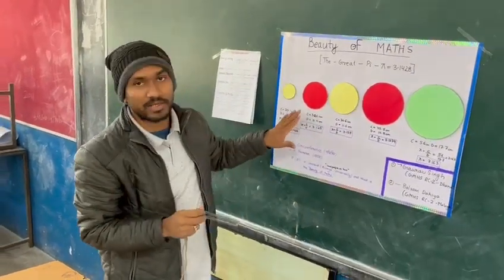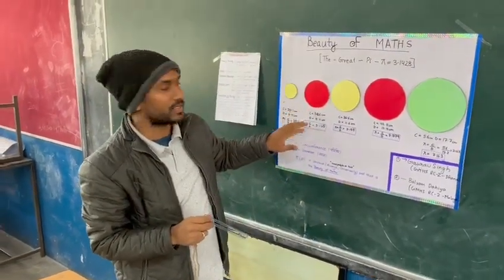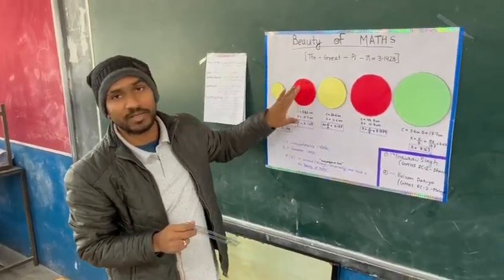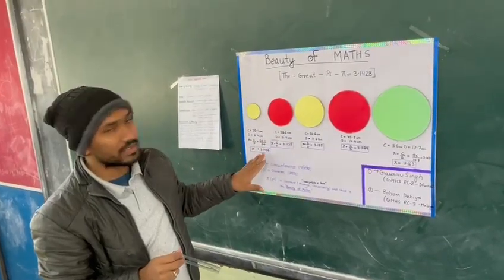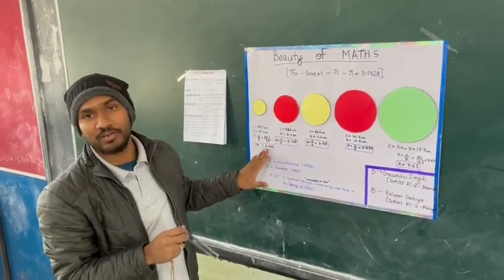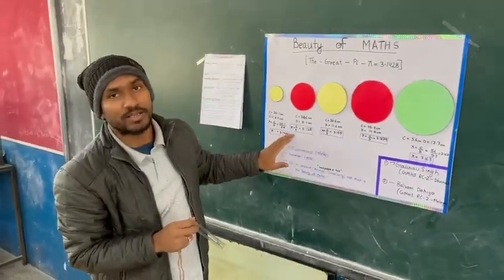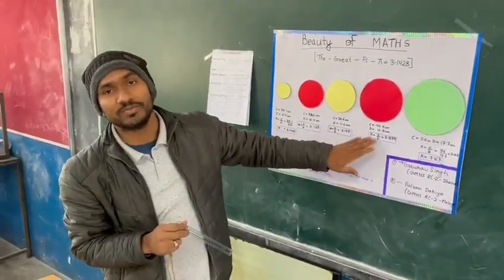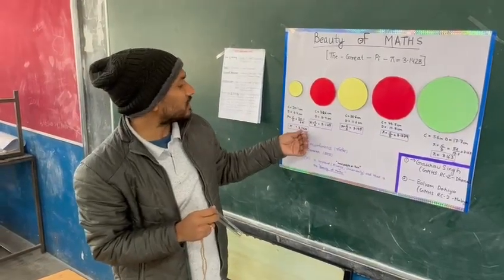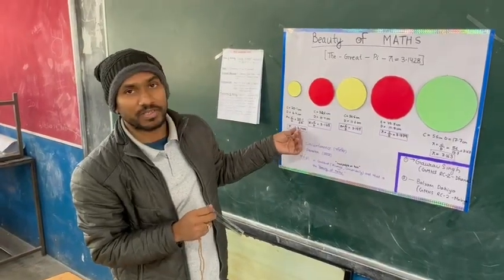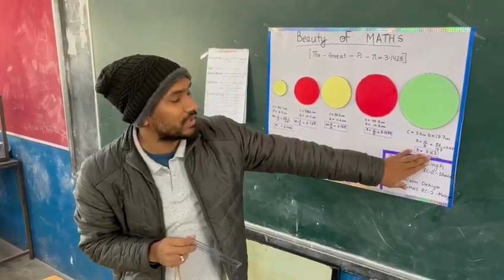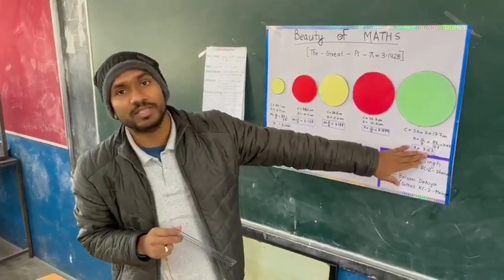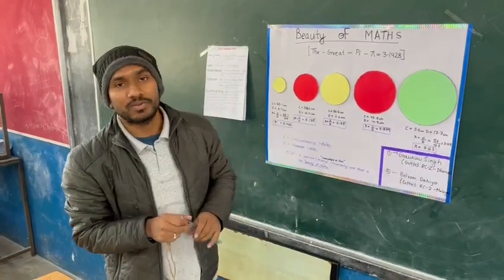We have found the ratio, that is, dividing the circumference by the diameter. We found that if we neglect human errors, the ratio is always the same — around 3.14 for the smallest and 3.163 for the biggest circle.